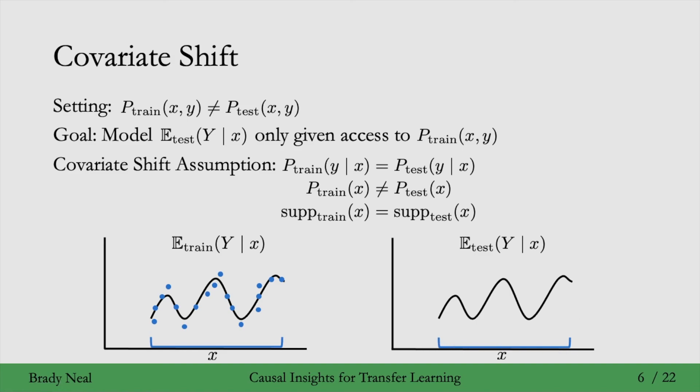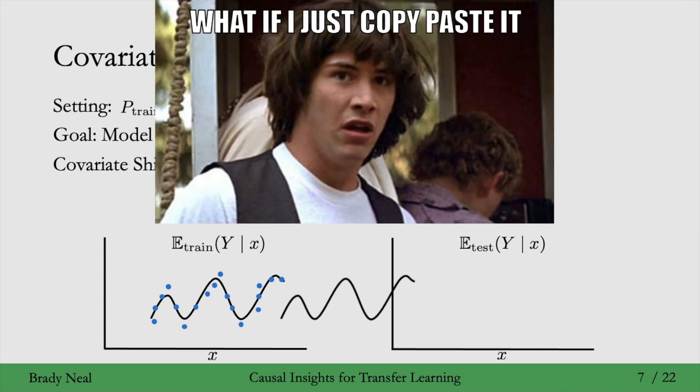Okay, so that's the covariate shift assumption. We just assumed that the conditional distribution of Y given x is the same in the train distribution and the test distribution, but this assumption seems maybe a little bit strong and not that attractive, because we're just copy and pasting the conditional expectation from the train distribution to the test distribution.